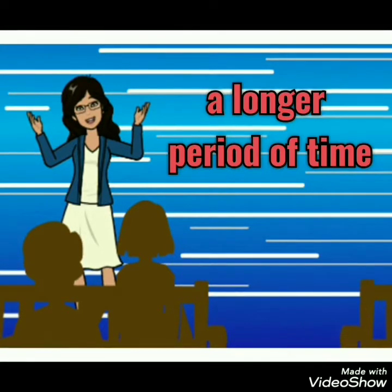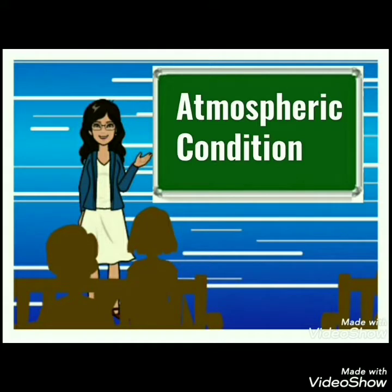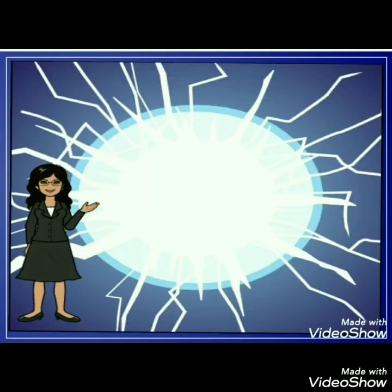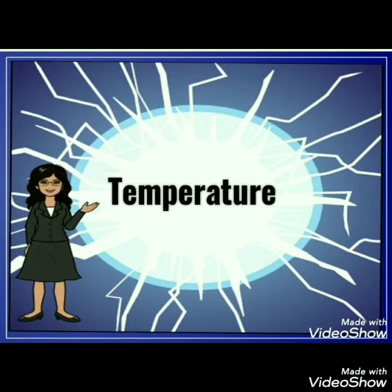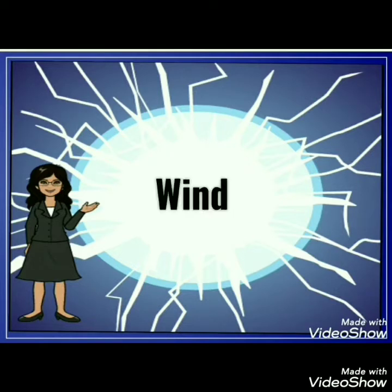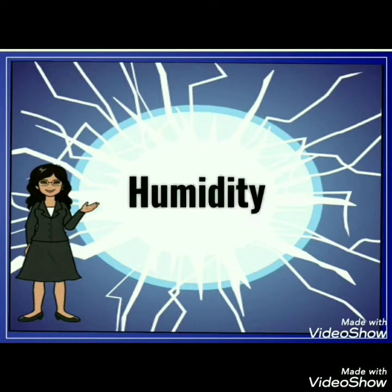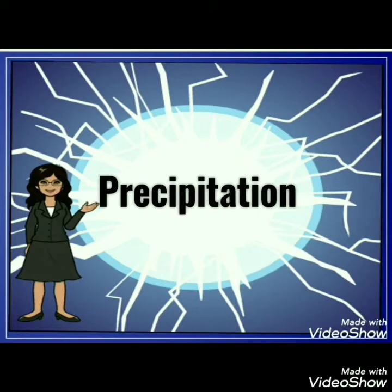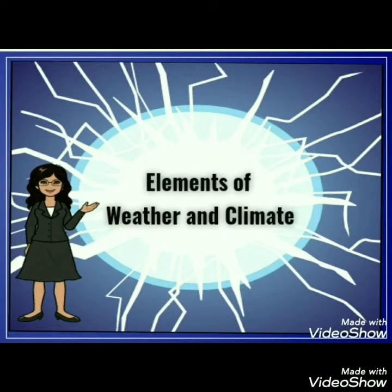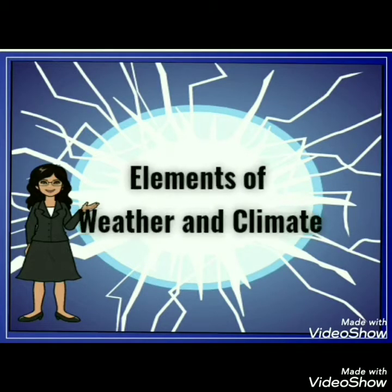Did you notice a common word used to define both weather and climate — that is, atmospheric condition? It refers to the state of the atmosphere in terms of temperature, air pressure, wind, humidity, and precipitation. These are called the elements of weather and climate.